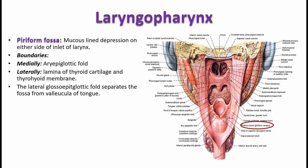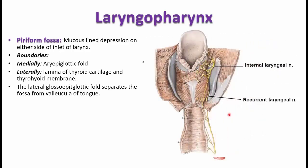Above, there is one more fold separating the piriform recess — that is the lateral glossoepiglottic fold. In the anterior part of the epiglottis, there is the median glossoepiglottic fold, and that part is the vallecula. The lateral glossoepiglottic fold separates the laryngopharynx from the vallecula of the tongue.